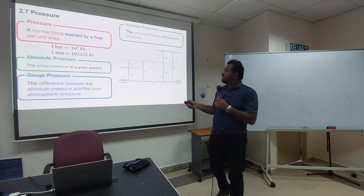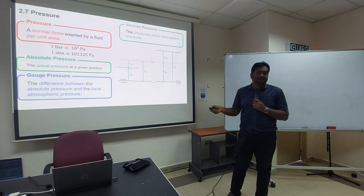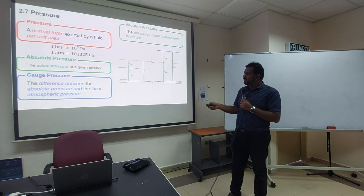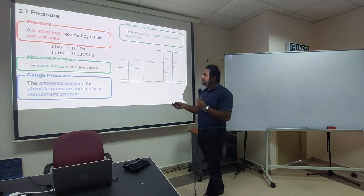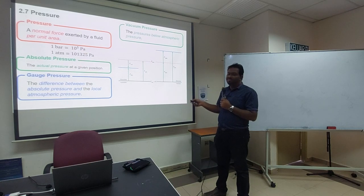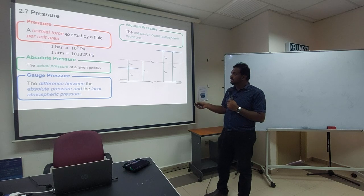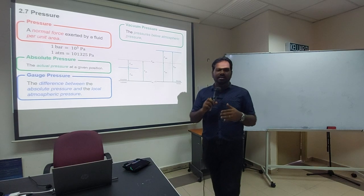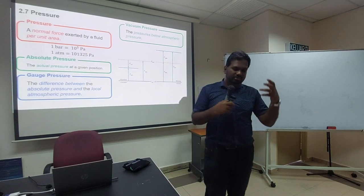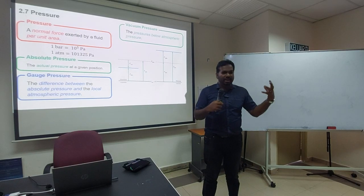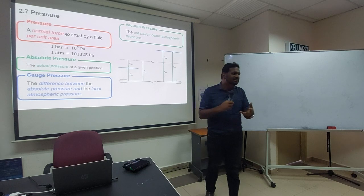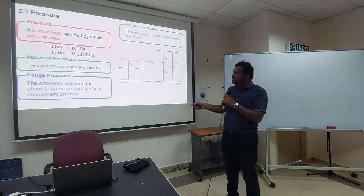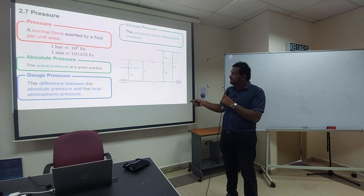Pressure is normally calculated in bar. One bar equals 10 to the power of 5 Pascal. One atmosphere (1 atm) of atmospheric pressure equals 101,325 Pascal. These are the units we will use. If you go to a petrol station to pump your tires, you will see the scale in either Pascal or bar — those are the conversion units.